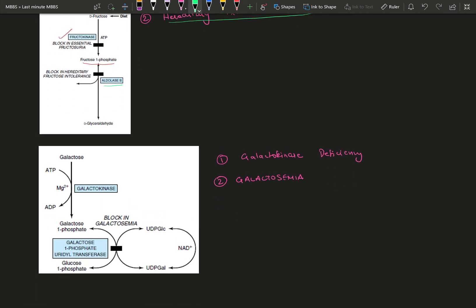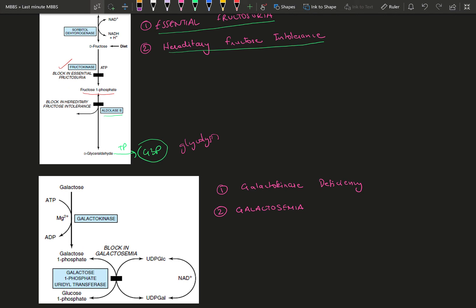You see this glyceraldehyde over here. You just add a phosphate to it, it becomes G3P, which is a glycolysis intermediate. You can just put this as a branch of glycolysis.